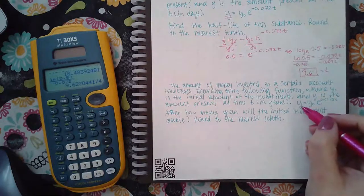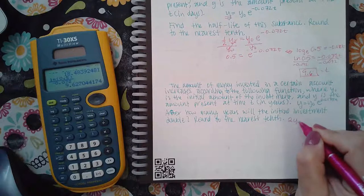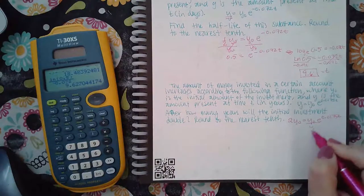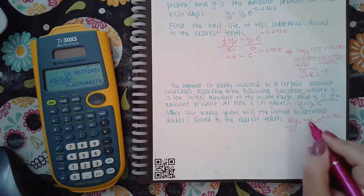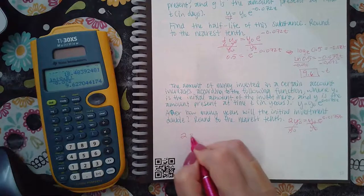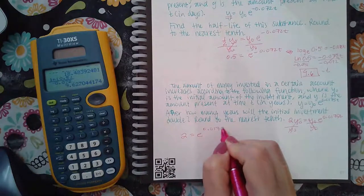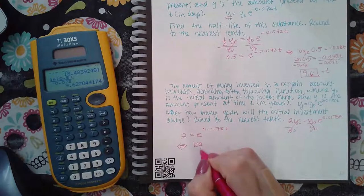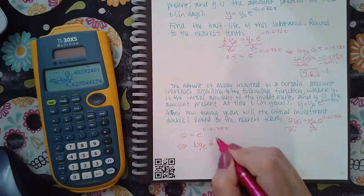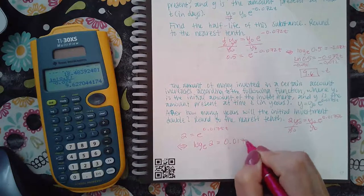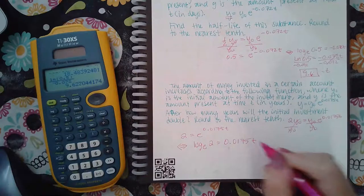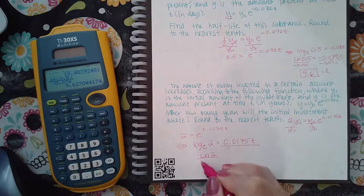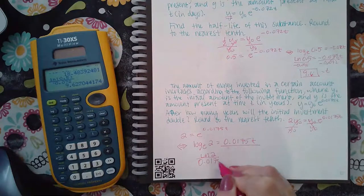That means this amount afterward would be twice what we started with. If I divide both sides by that coefficient of the exponential, I get 2 equals e to the 0.0175t. If you change the forms over into its logarithmic form, log base e, this would be my argument and then the exponent goes on the other side because a log is equal to an exponent. This is just ln of 2, and then I would divide by that decimal to figure out what t is.